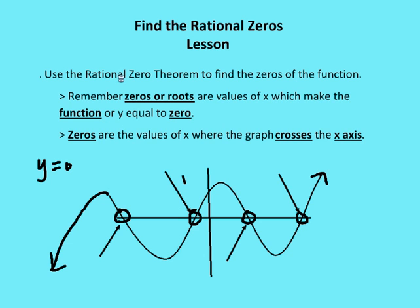Just remember when using the rational zero theorem to find zeros of the function: zeros or roots are just values of x which make the function or the y value equal to zero. It's just where the graph crosses the x-axis. Where I've placed a circle here, that's where the graph is crossing the x-axis — you can see there are 4 different roots. Zeros are not factors of a polynomial; they are solutions, roots, or zeros of the function, telling us where y equals zero.